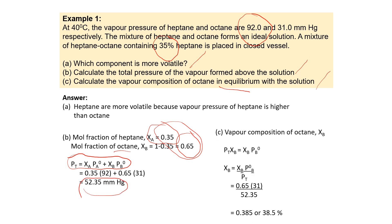For question C, the vapor composition of octane (Y octane) is calculated using the formula: total pressure times the mole fraction of octane in the vapor equals the mole fraction of octane in the liquid times the vapor pressure of pure octane. Substituting in the values obtained previously, we get the vapor composition of octane equal to 0.385, or 38.5%.